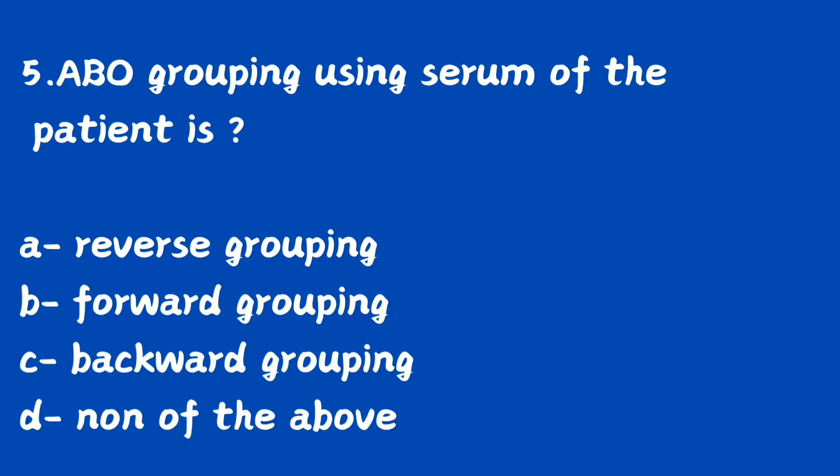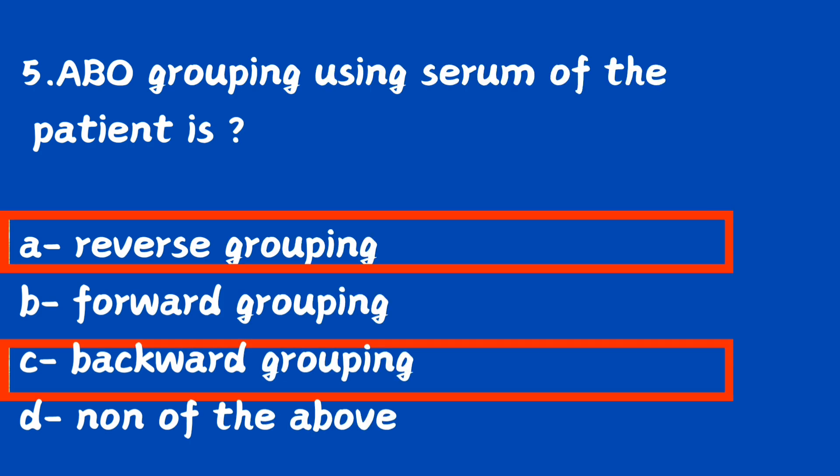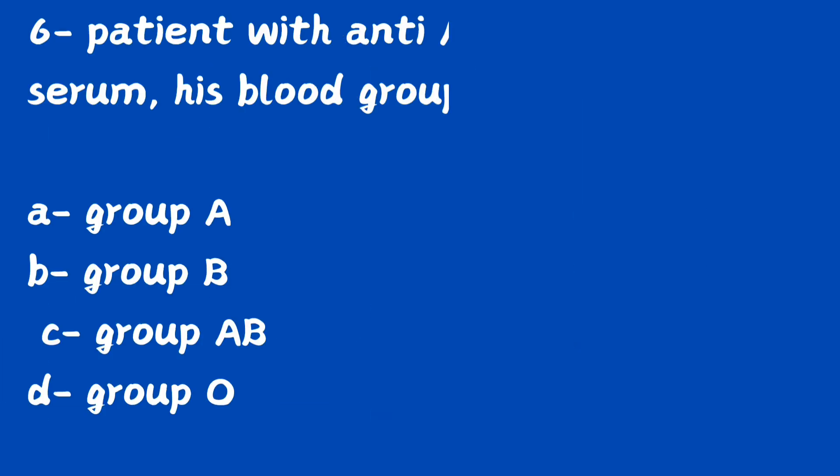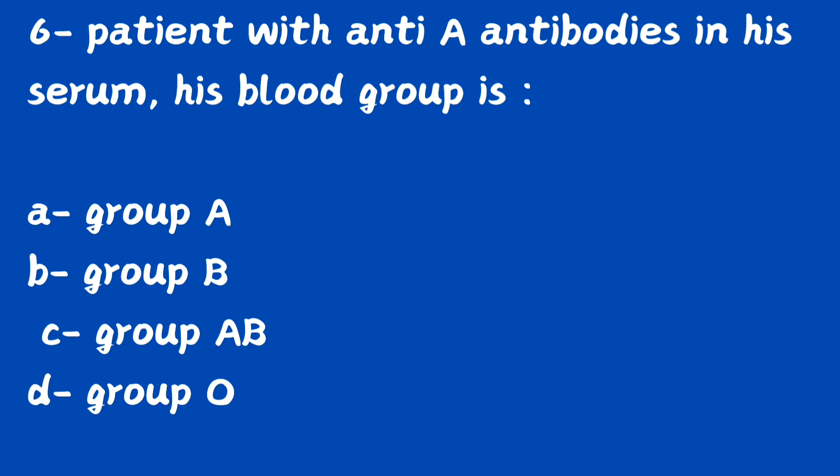Question number 5. ABO blood grouping using serum of the patient is: option A, reverse grouping; option B, forward grouping; option C, backward grouping; option D, none of the above. The right answer is option A and C — reverse grouping or backward grouping. Both are the same. ABO grouping using serum is reverse or backward grouping.